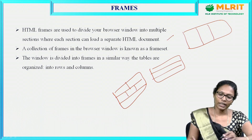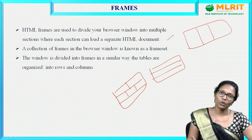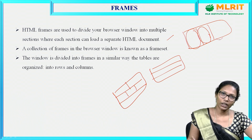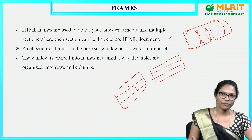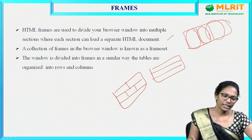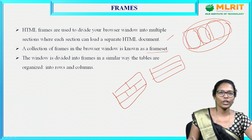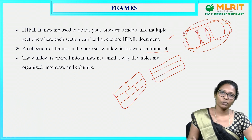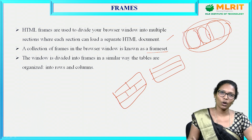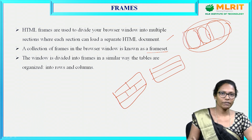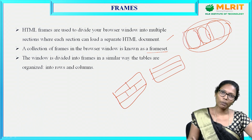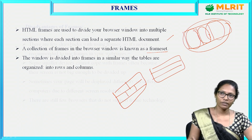A frameset is nothing but a collection of frames in the browser window. Each individual part of the webpage is called a frame, and the collection is called a frameset. It is possible to divide a webpage into multiple rows or multiple columns in HTML using the frameset tag, and each part of the webpage is called a frame.